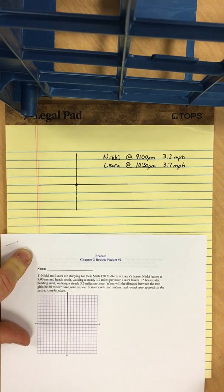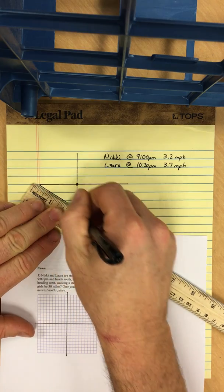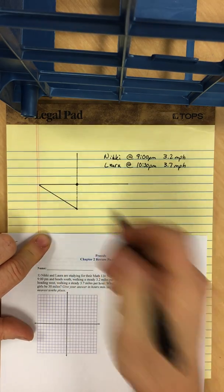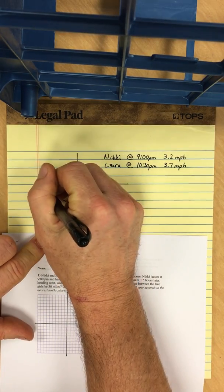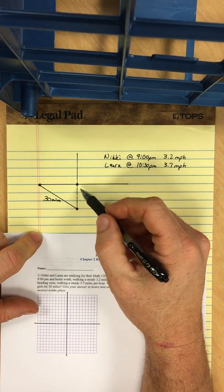We know the distance between the two girls will be 30 miles. So at some point, the distance between the two girls is gonna be 30 miles. We know from here to here, it's gonna be 30 miles. So we can use Pythagorean theorem.